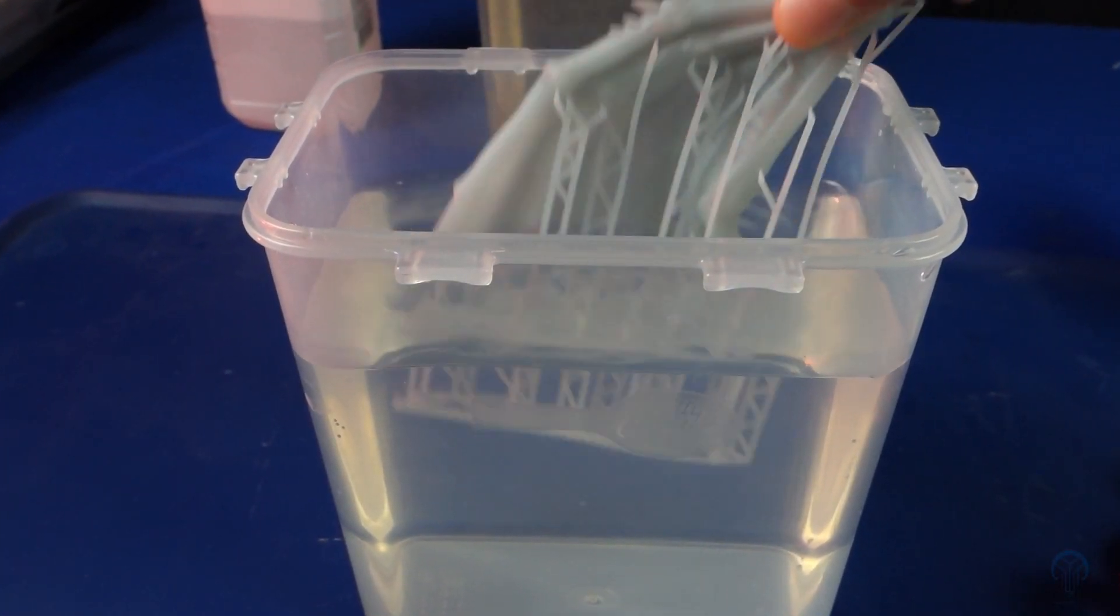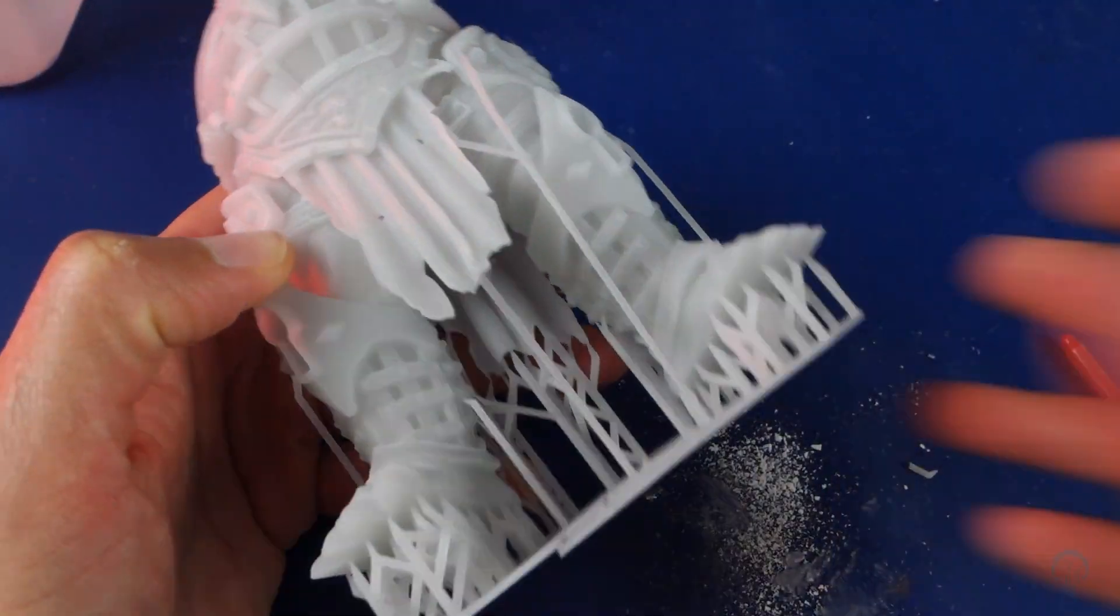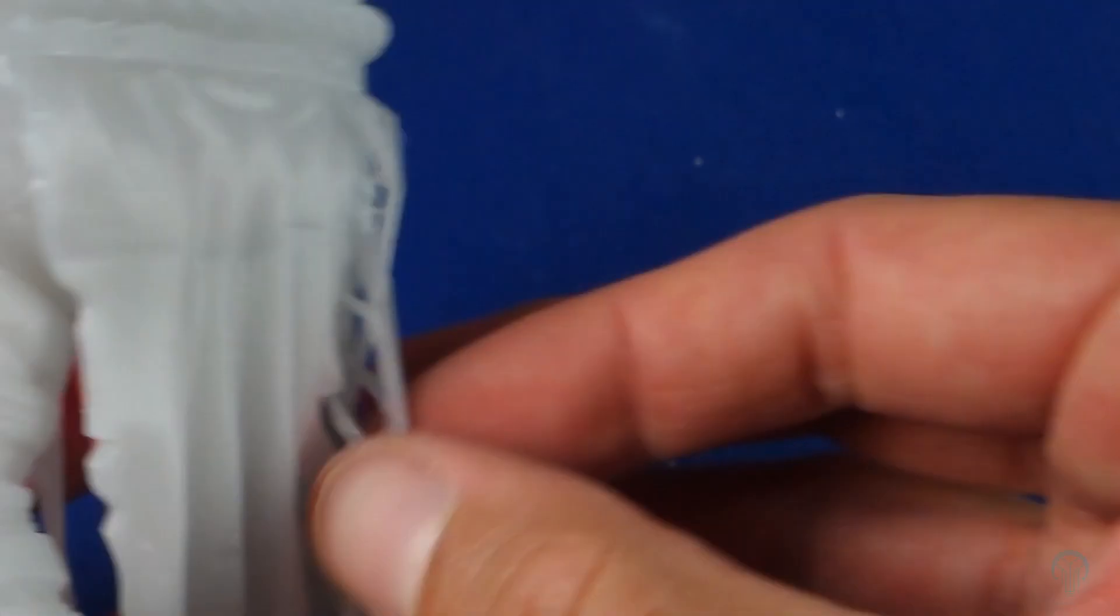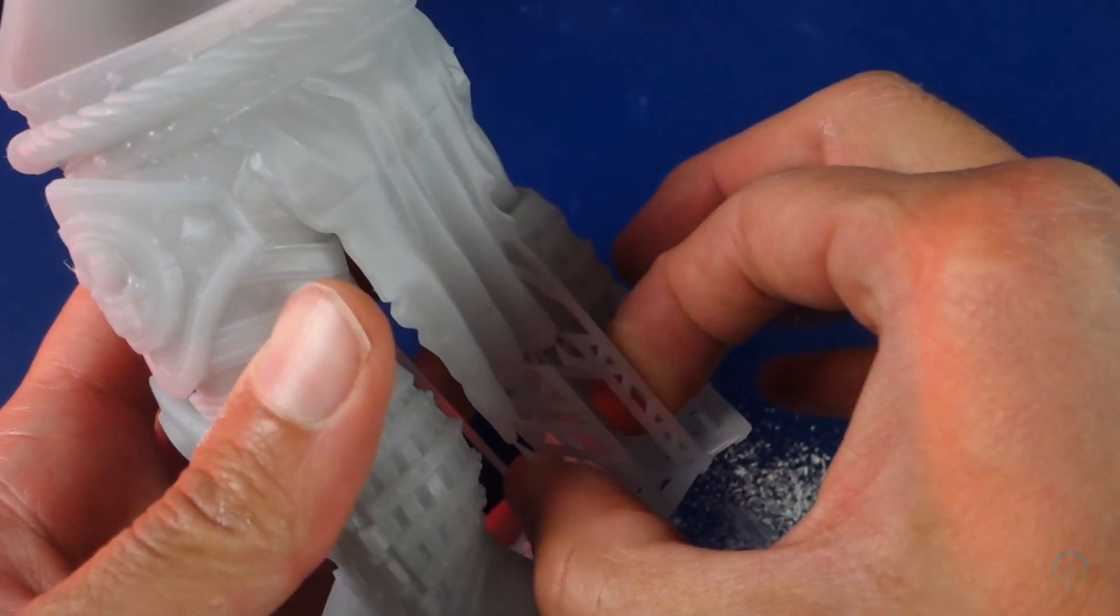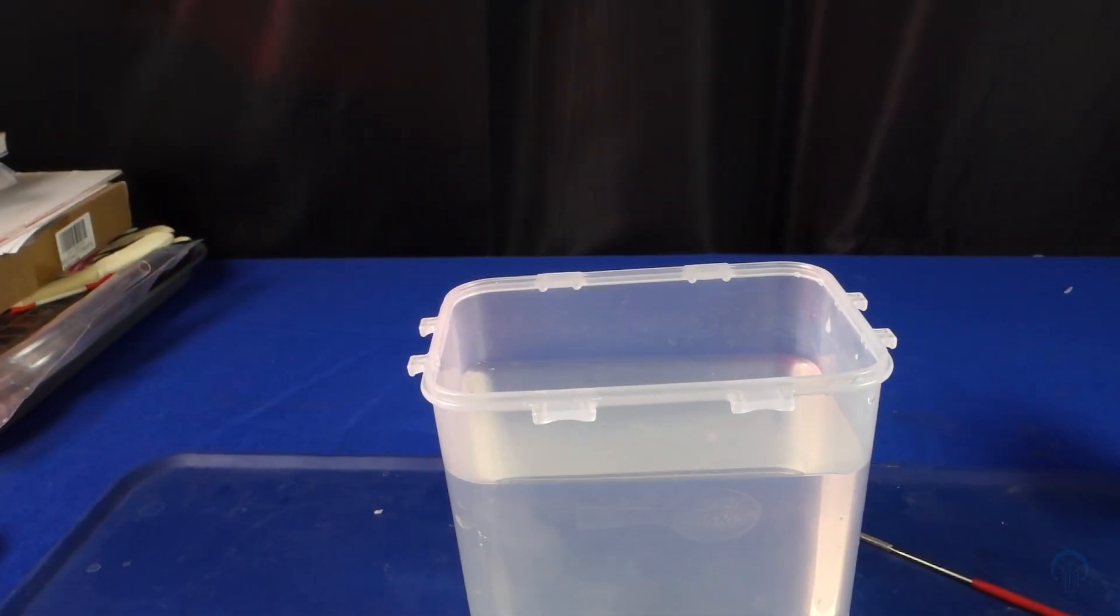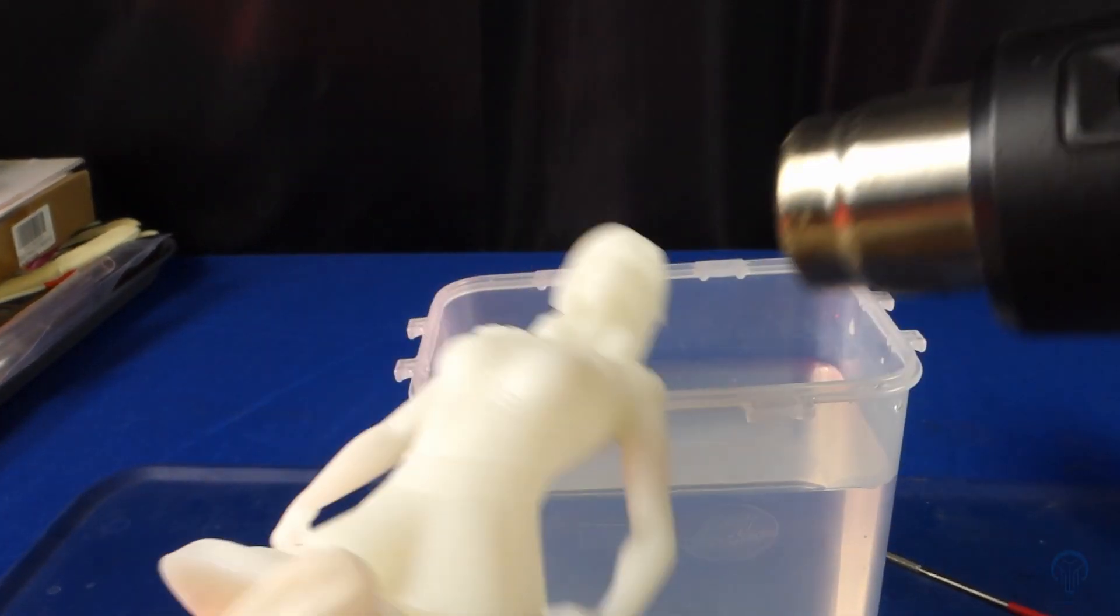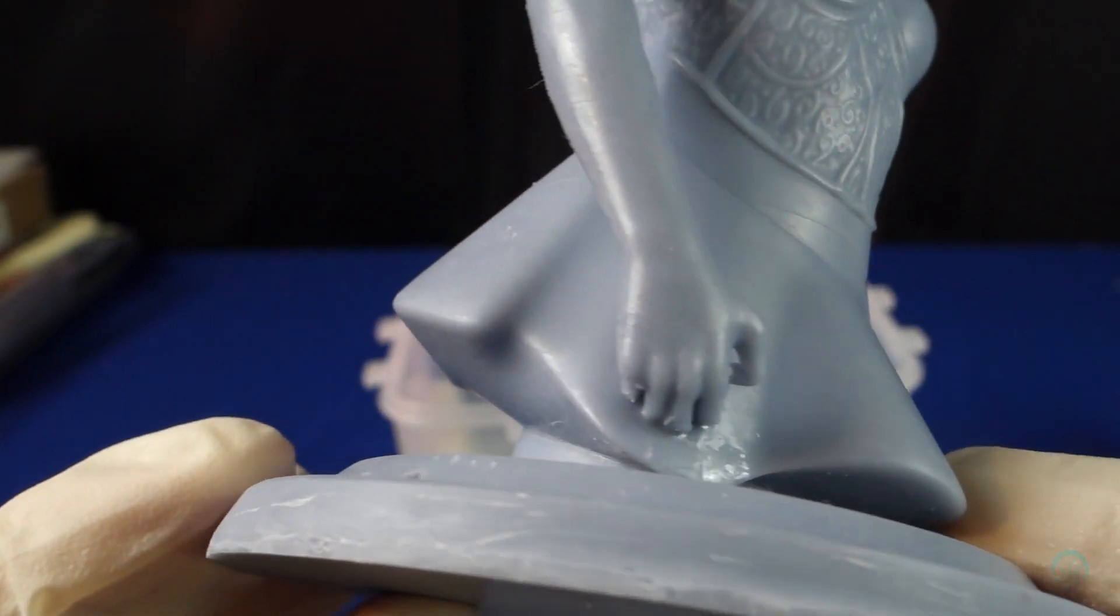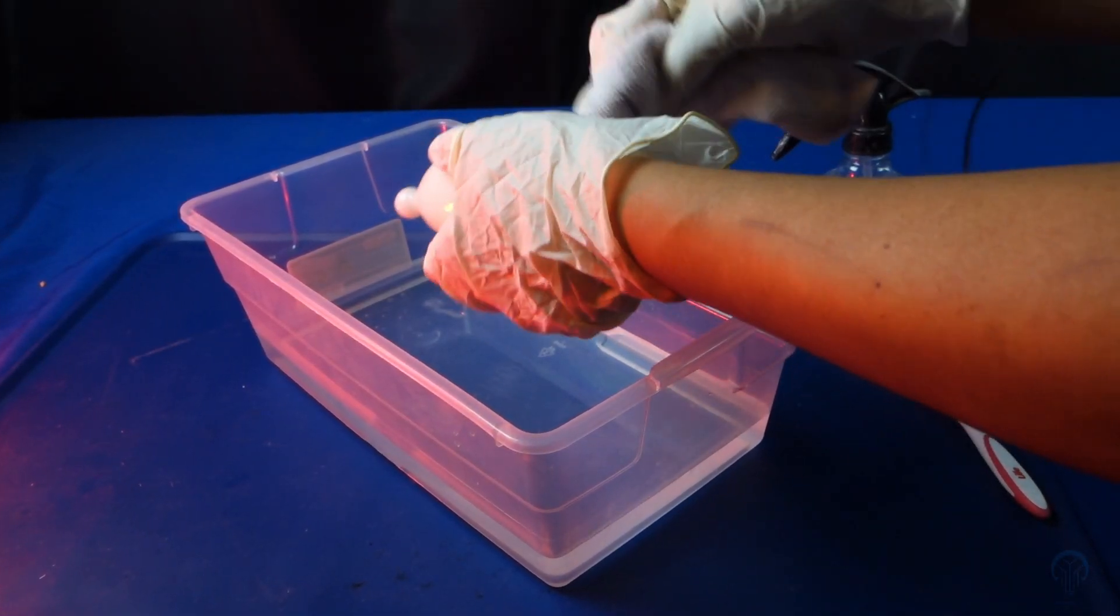While some people will use warm water to soften their models, in most cases you don't actually have to do this. Instead, simply allowing the model to soak in isopropyl alcohol for about 1 hour will often have a similar effect. Another method is to use a hairdryer to gently heat the supports so that it becomes softer as well. Another benefit of using a hairdryer is that you can quickly tell which areas still need to be cleaned by drying it off and looking for any shiny areas.